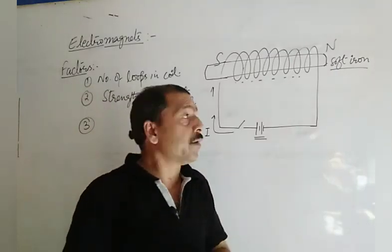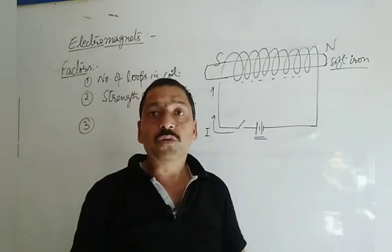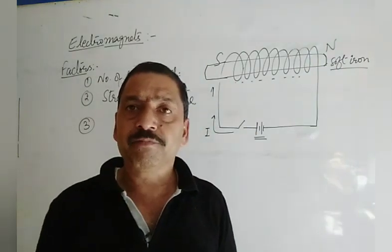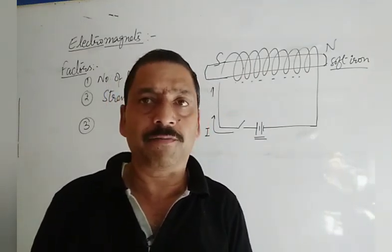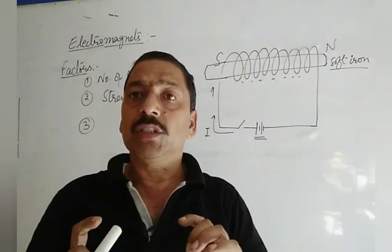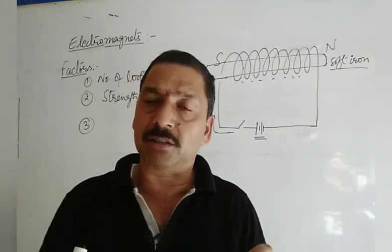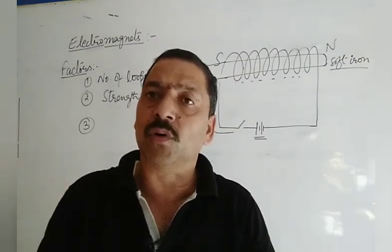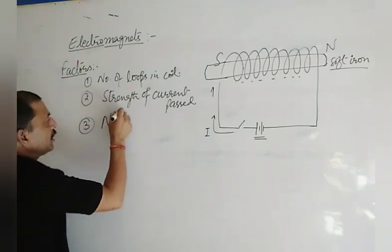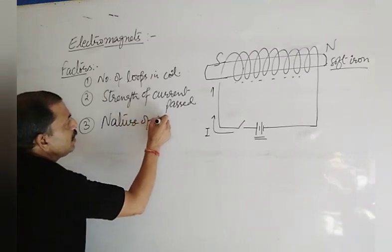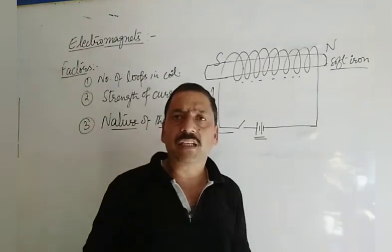Factor number three depends on the nature of the rod placed inside the coil — the core material used. For example, if we use steel, it magnetizes slowly, but when switched off, it retains its magnetism. If we use soft iron, it magnetizes quickly and immediately loses its magnetism when switched off, becoming a simple rod. So the third factor is the nature of the core used.